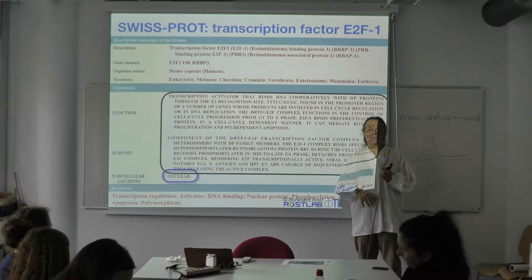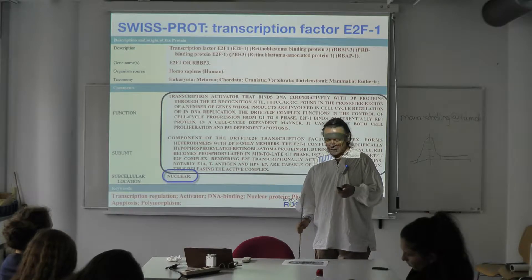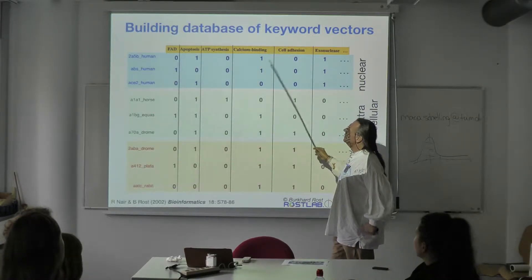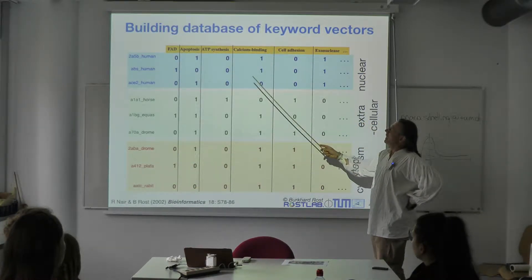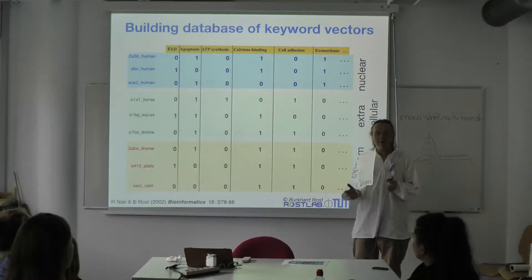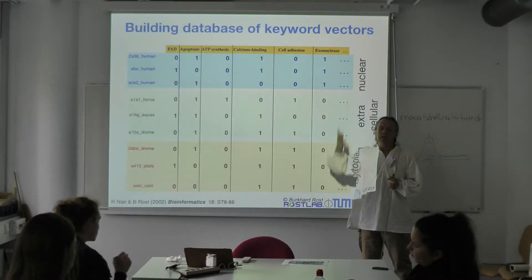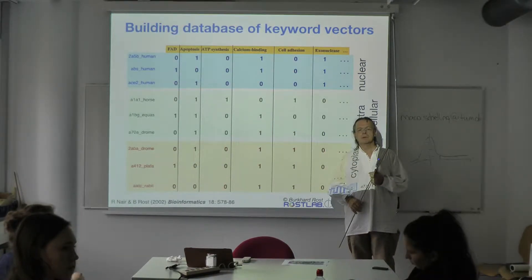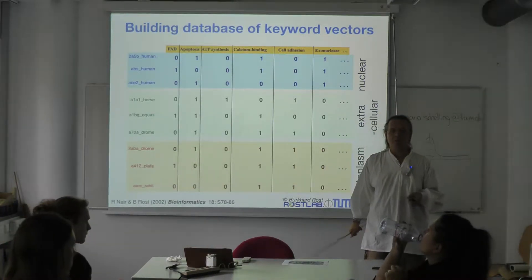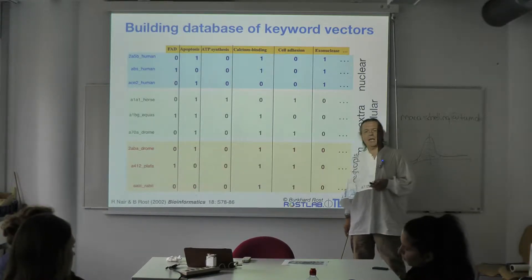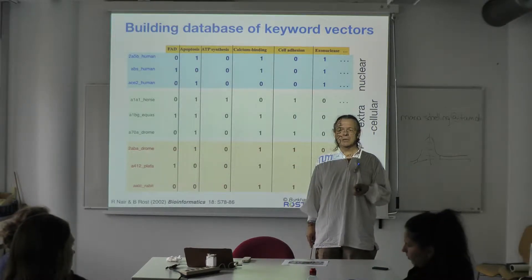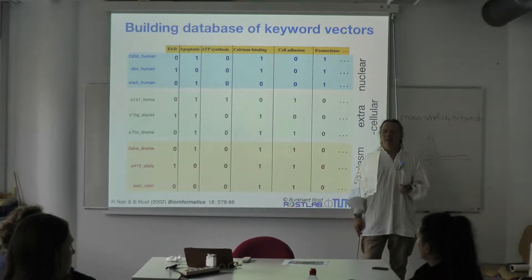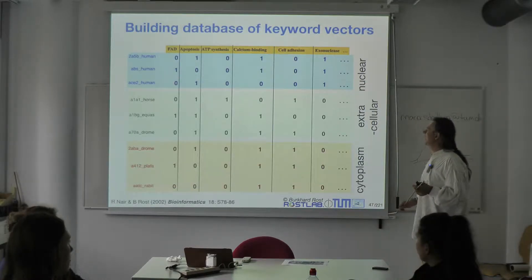In the rows are the proteins; in the columns are the ~400 keywords. Every single protein is now characterized by a binary vector with zeros and ones: one if that keyword appears in the record, zero if it doesn't — no matter how often it appears, since what matters is its presence. The simplest thing is a binary vector. If 'transcription activator' were a keyword, it doesn't matter how often it's written in the record; it's important that the protein is a transcription activator.